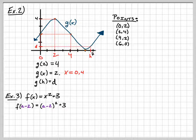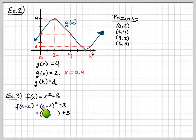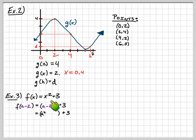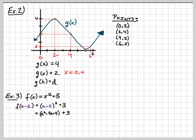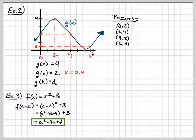Using the shortcut for FOILing: square the first term to get a squared, multiply the two terms together to get negative 2a and then double it to get negative 4a, then square the last term — negative 2 squared is 4. So we have a squared minus 4a plus 4, plus 3. Combining like terms: f of a minus 2 equals a squared minus 4a plus 7.